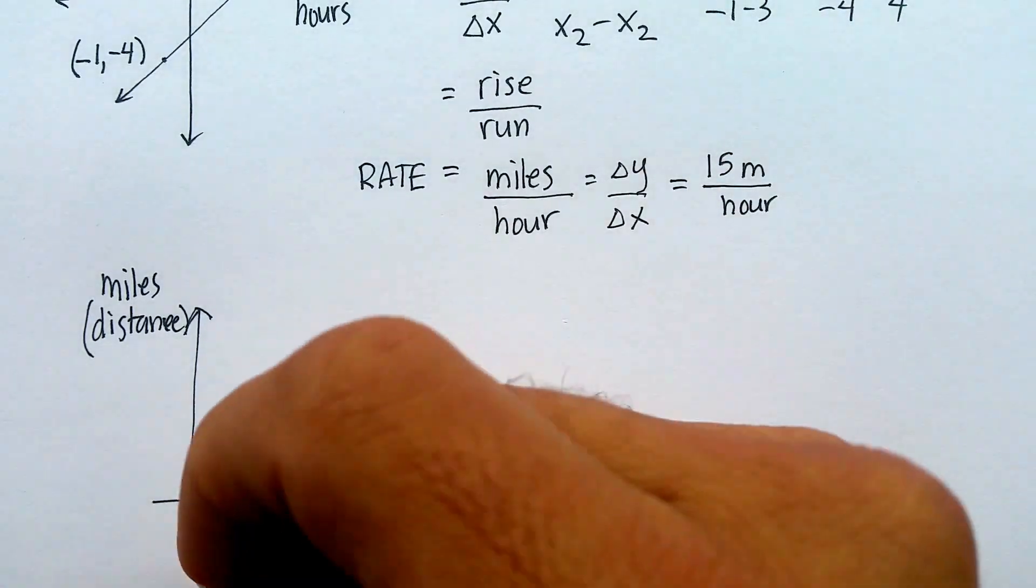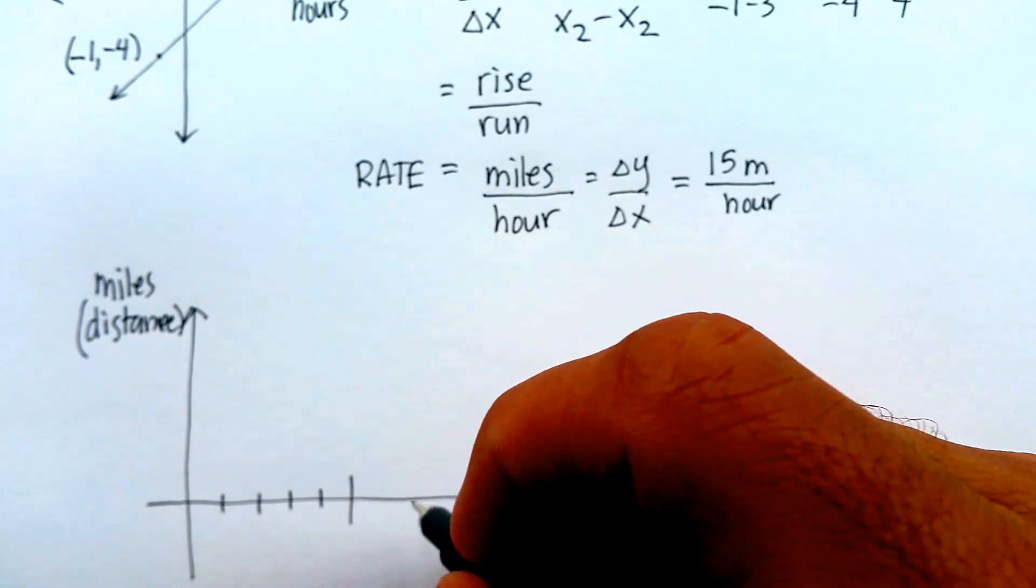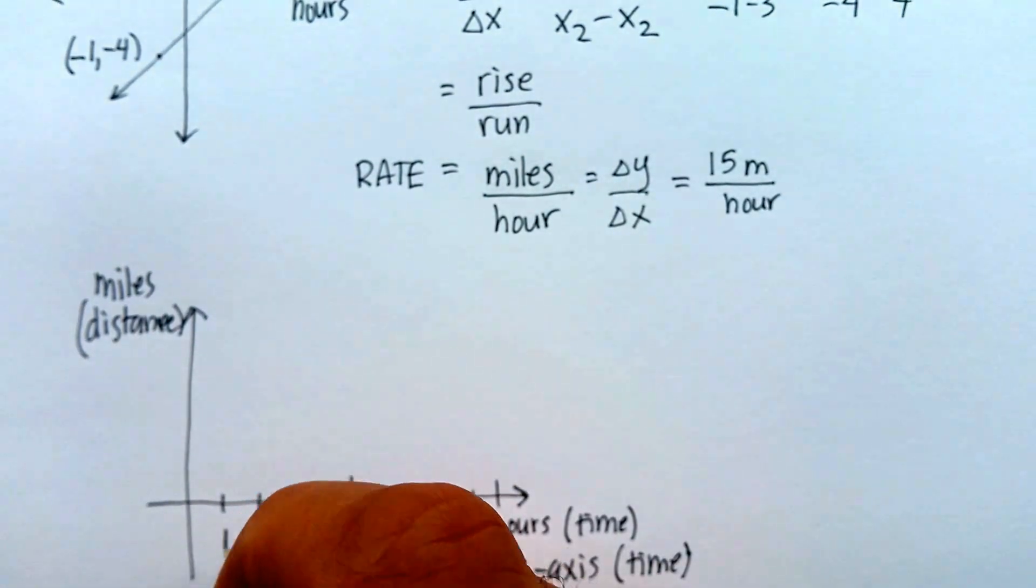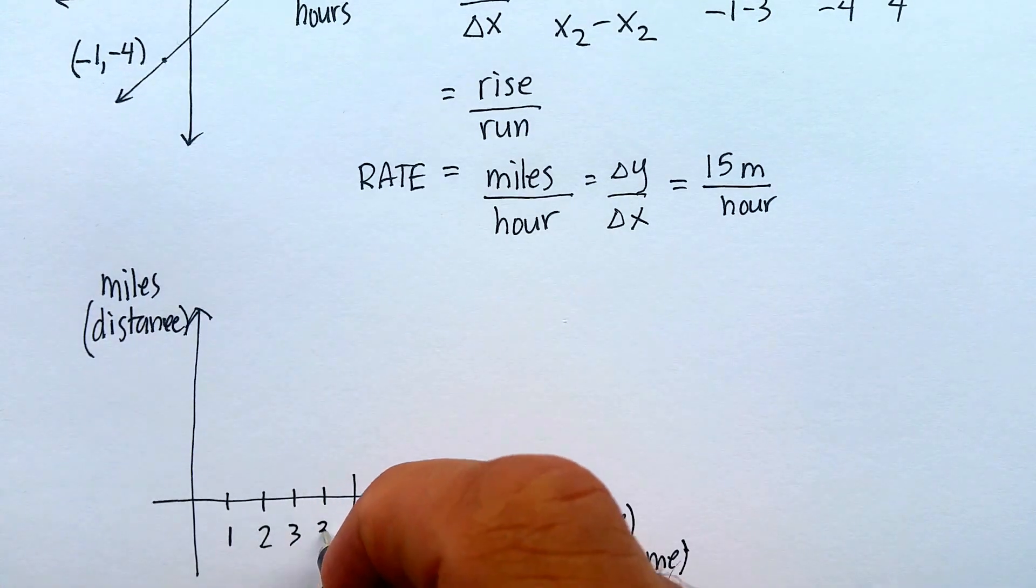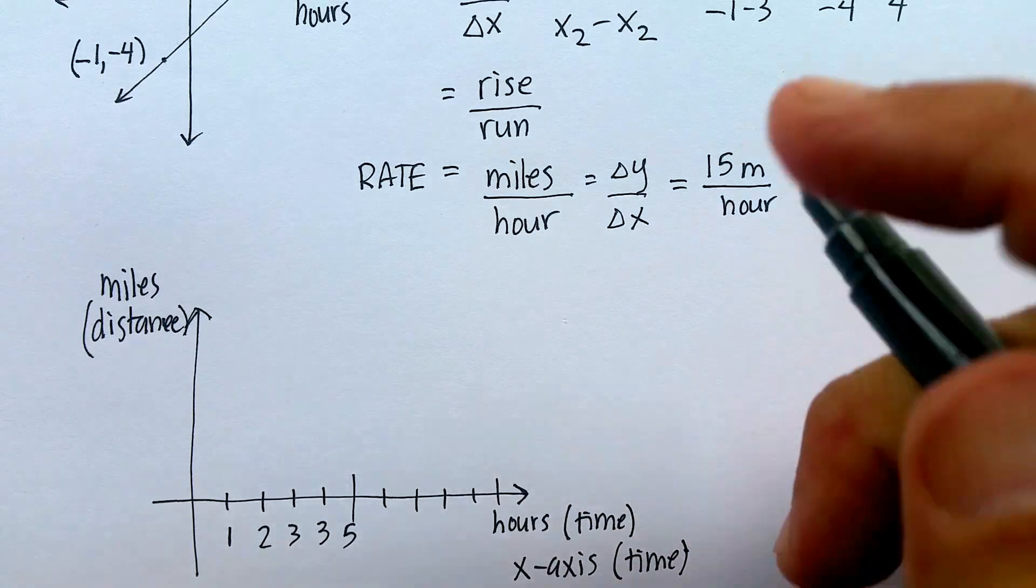So it would make sense to try to fit this. So we'd have like one hour, two hours, three hours, four hours, five, six, seven, eight, nine, ten, and then we just go ahead and label. It would be important to do that, and then you could just say the rest of it is continuous.